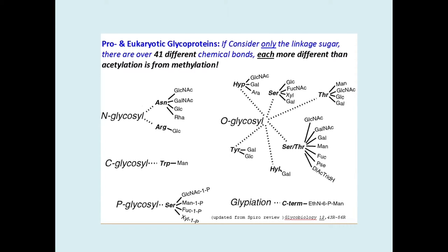Glypiation is characterized by a glycan core which links a phospholipid and a protein. In C-link glycosylation, the mannose binds to the indole ring of tryptophan. And lastly, in phosphoglycosylation, the glycan binds to serine via a phosphodiester bond. In summary, the glycosylation categorization relies on the signature amino acid residue it binds to.